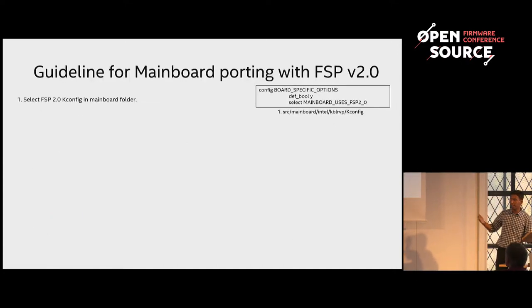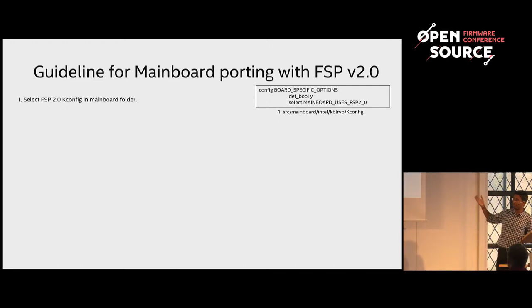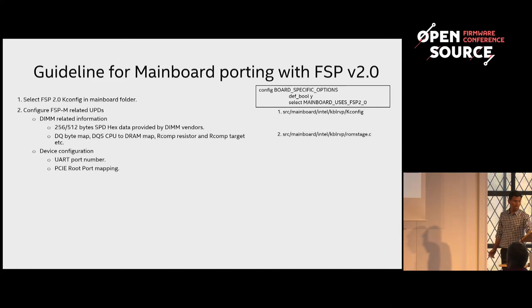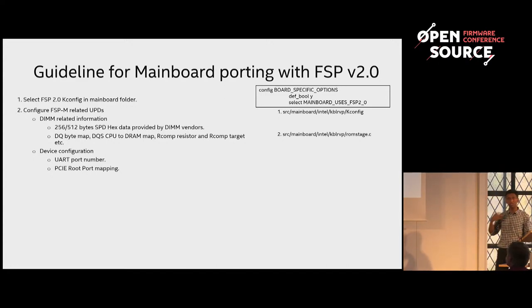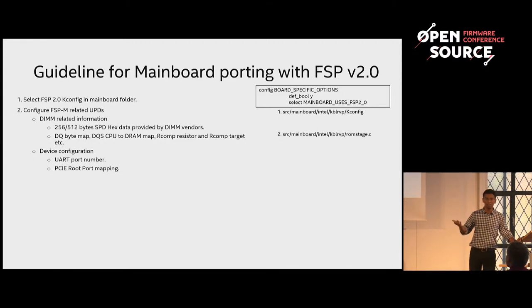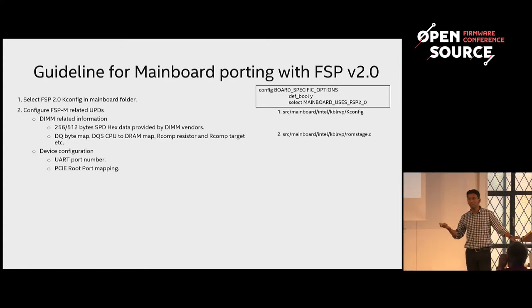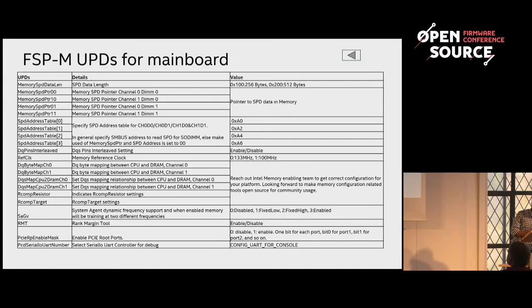As a developer or user, you may only need to focus on those four files to port a new mainboard and change FSP configuration parameters. First is kconfig, where you tell what FSP spec your mainboard supports. For example, here we tell that FSP 2.0 is the latest spec, and our Kabylake SOC supports FSP 2.0. Second are FSP-M related UPDs, categorized into MRC training UPDs and device configuration UPDs. MRC-related UPDs can be further classified based on your memory design — for example, a memory-down solution where you get SPD data from your vendor, or SODIMM where you read SPD via SMBus.